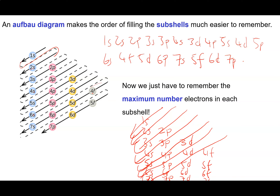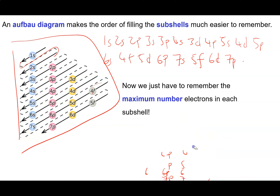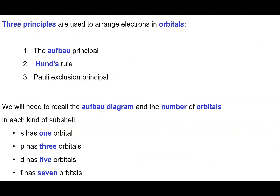We never see anything filled beyond 7p. You just have to memorize this diagram or have it handy. An s subshell can hold a maximum of 2 electrons, p a maximum of 6, d a maximum of 10, and f a maximum of 14.